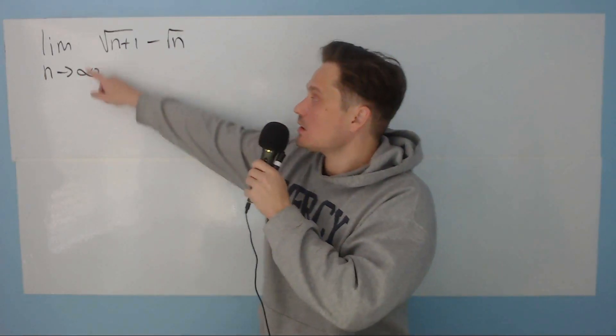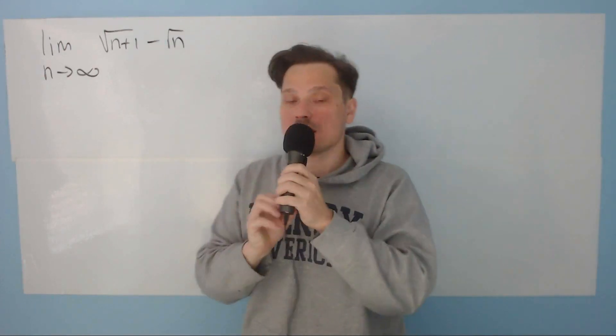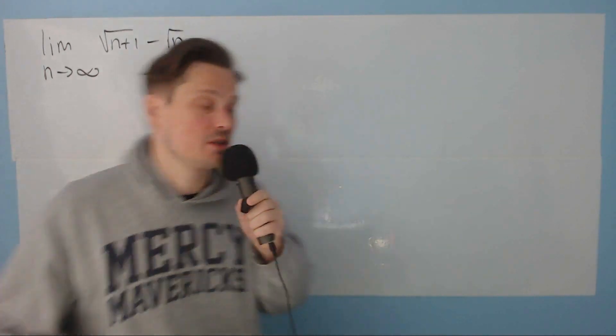In this one, let's take a look at finding the following limit here. The limit as n goes to positive infinity of the square root of n plus 1 minus n. That's our objective. So to do this, first of all, we have to make a preliminary observation.